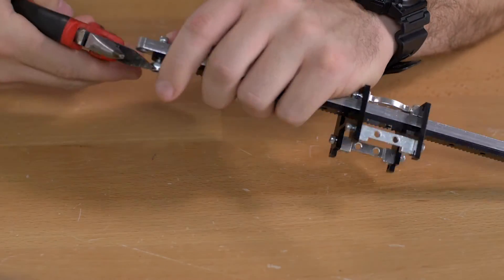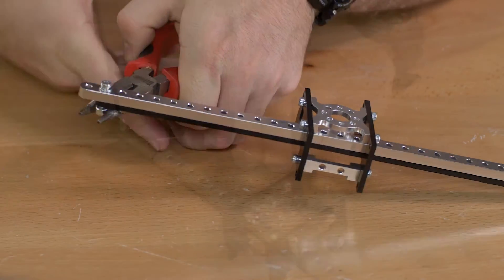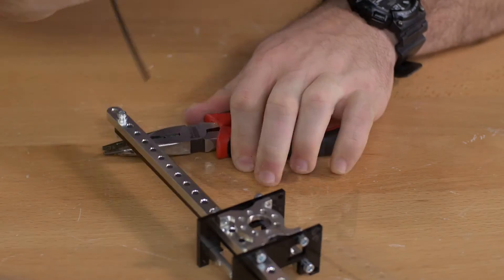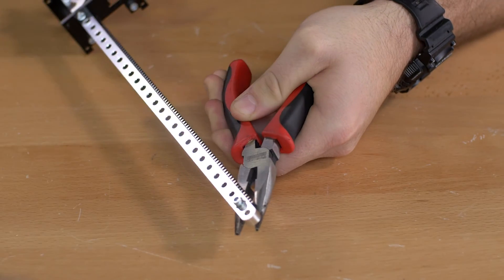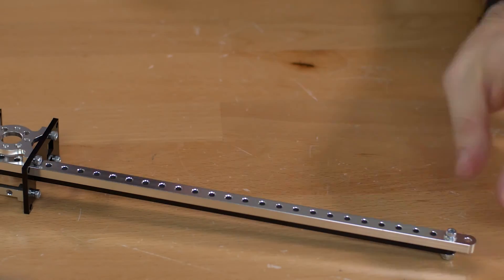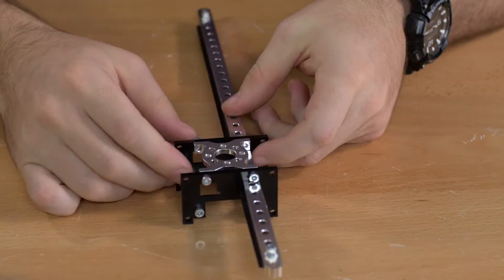And this is where you're going to use your pair of pliers. And we'll do that for the other side. And once you have that one together you're going to do the exact same thing for the other hole.